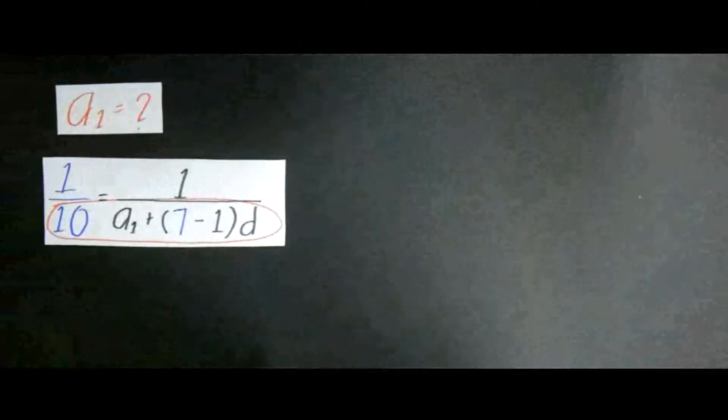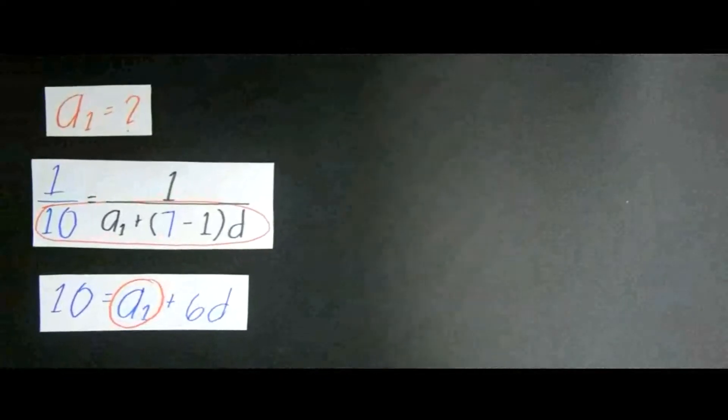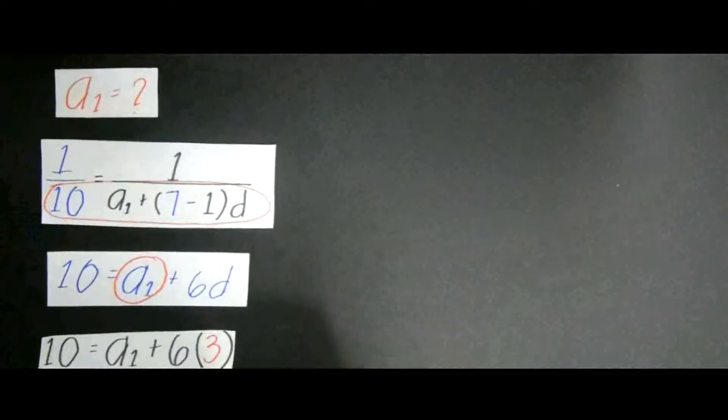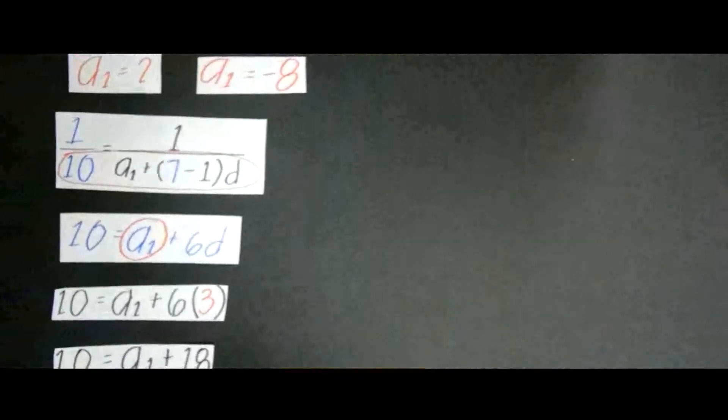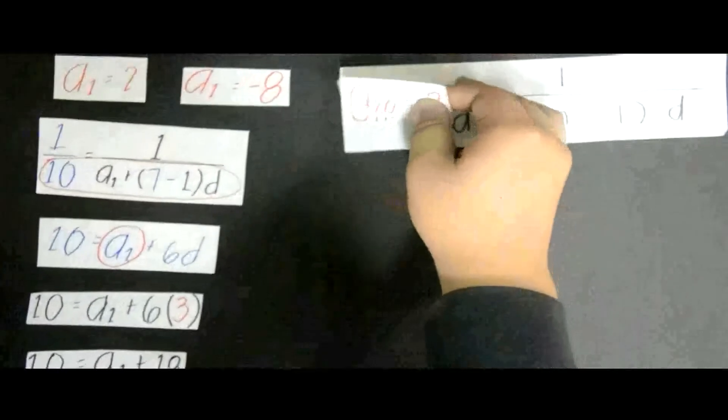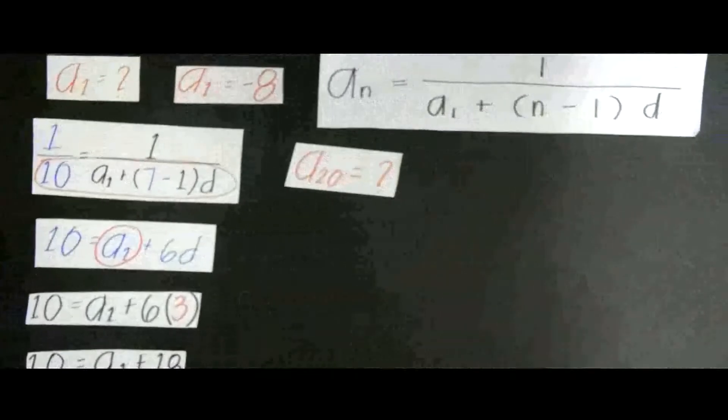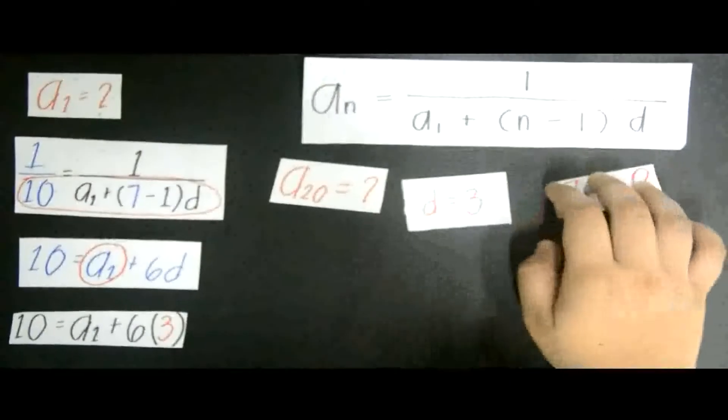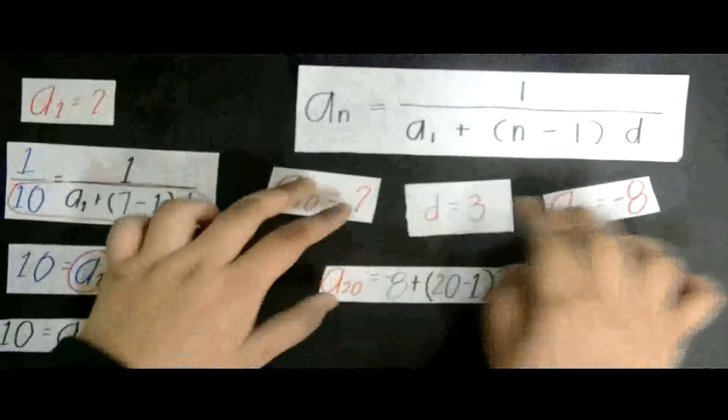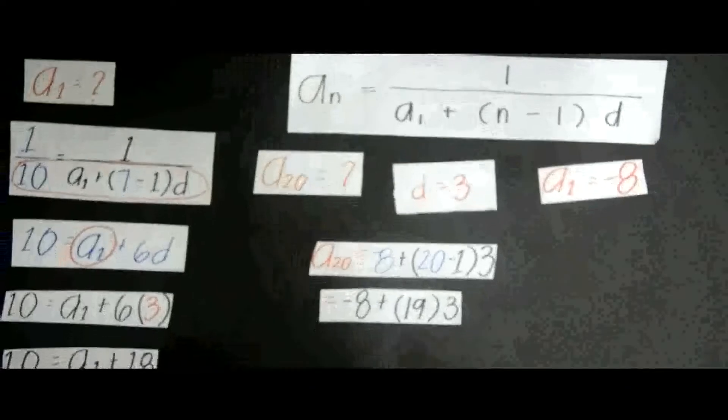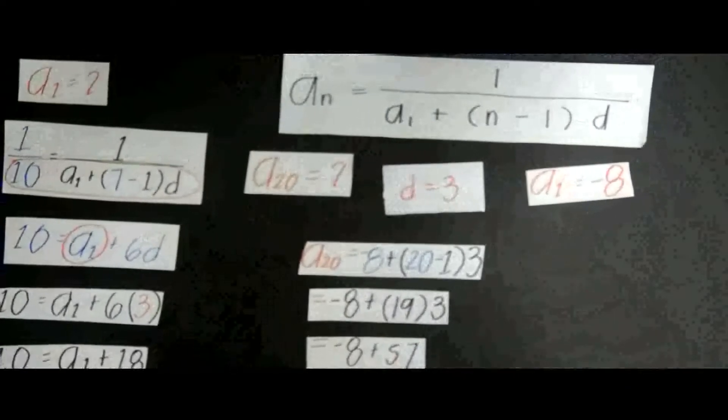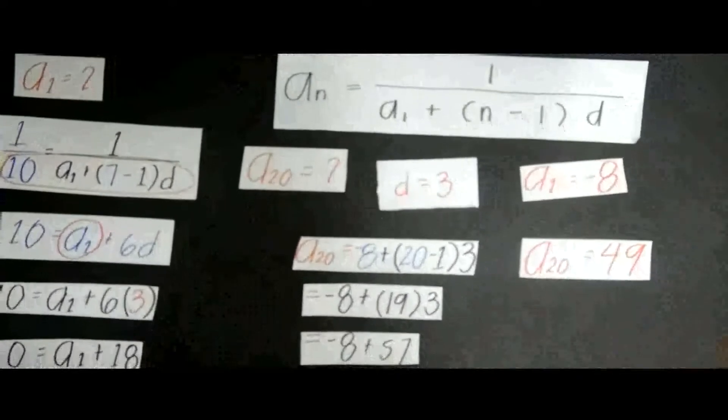Once you have solved for a_1, you can now substitute that into one of the formulas and solve for a_20. The answer: a_20 is equal to 1 over 49.